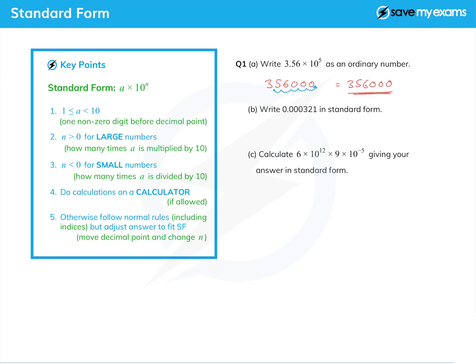Now this is a very small number. It's less than one, much less than one, and so we're expecting n to be less than zero. We are indeed going to divide by 10 a lot. The first non-zero number is 3 in this one, so the 'a', the bit at the beginning of standard form, is going to be 3.21.